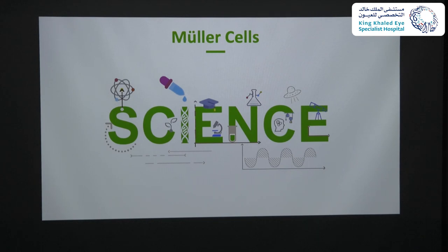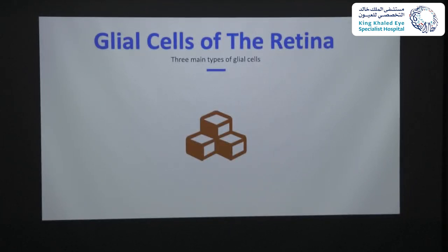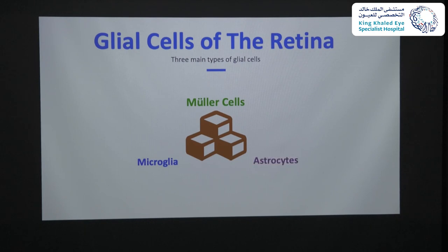That's why for first-year residents who are now taking the basic science course, this course is the most important course in your career, if you decide to continue as an ophthalmologist. There are three main types of glial cells in the retina. The first is microglia, which has an important role in the host's defense against organisms. Then we have two types of macroglial cells: Müller cells and retinal astrocytes.